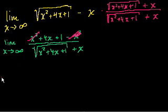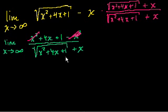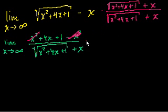Since we're taking x to infinity, we divide the numerator and denominator by our highest degree term, which is x. Remember, anything you do to the numerator you must do to the denominator, so we multiply by 1 over x divided by 1 over x. This lets the lower-order terms vanish as x approaches infinity.